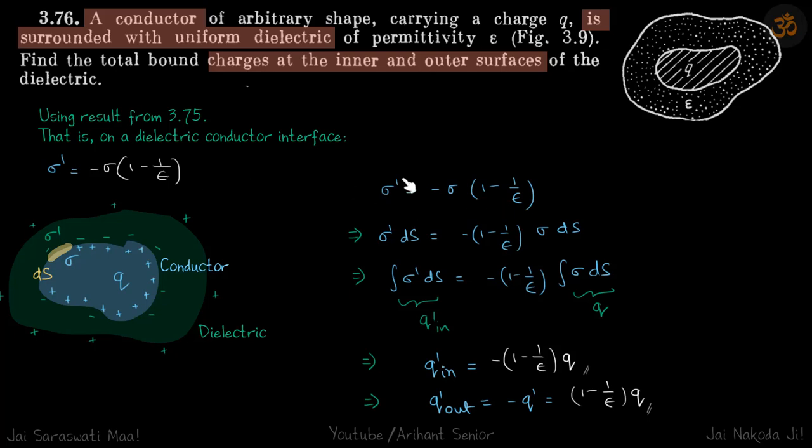Writing this equation again and multiplying it by ds both sides because the area element is common for both the dielectric and the conductor. And then we integrate. Sigma dash ds we get a term of that and sigma ds term we'll get here.